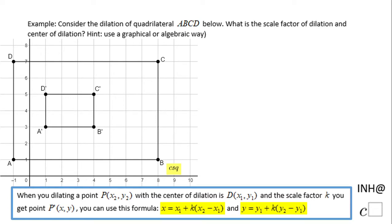Welcome or welcome back to I Need Help at C Squared. In this example, we're going to find the center of dilation and the scale factor of dilation. We have a large rectangle ABCD and then we shrink it, we make it smaller and get A prime B prime C prime D prime.